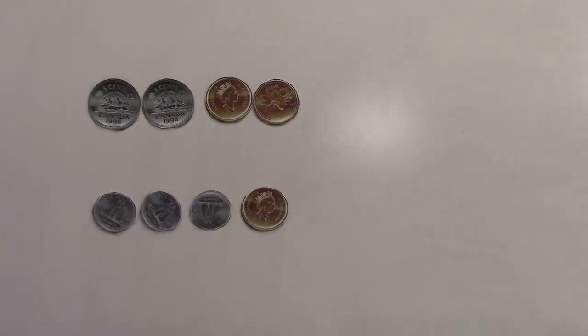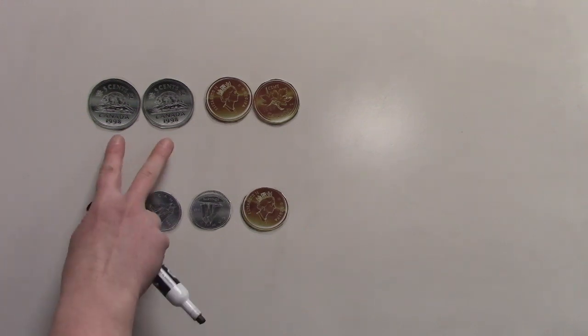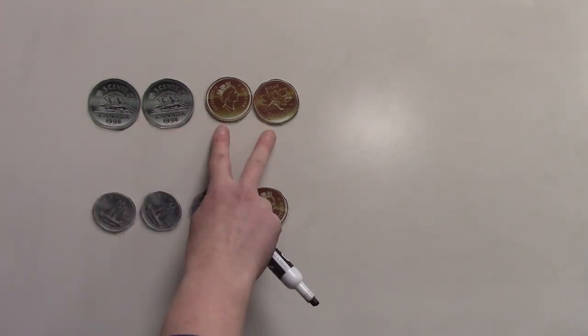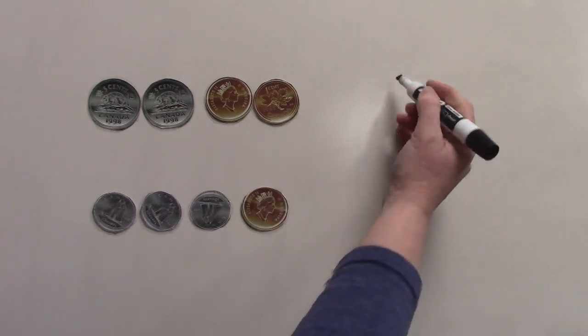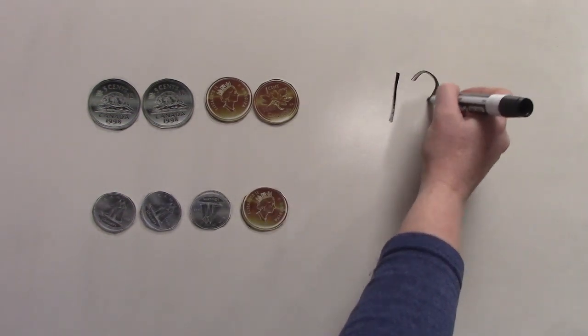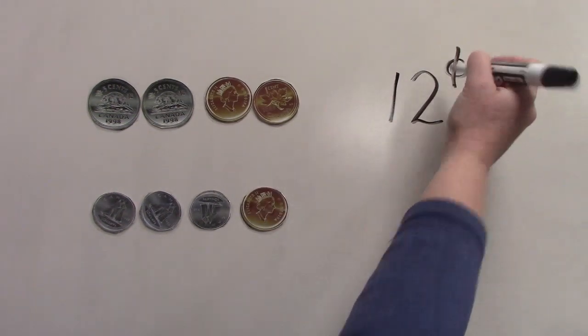Let's count some money again. We have two nickels and two pennies on the top row. And we have three dimes and a penny on the bottom row. Let's count the top row first. 5, 10, 11, 12. We have 12 cents on the top row.